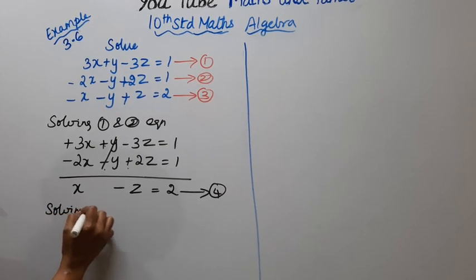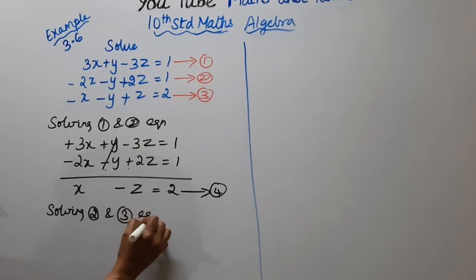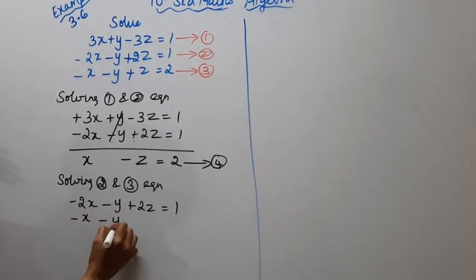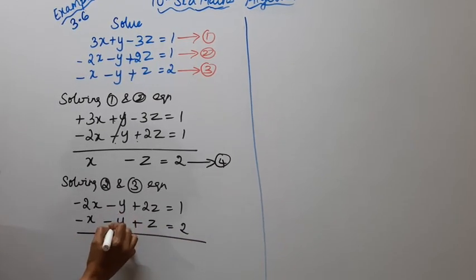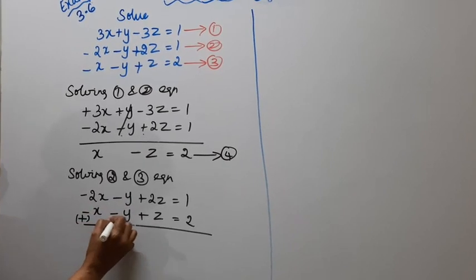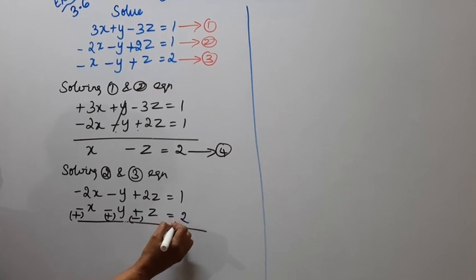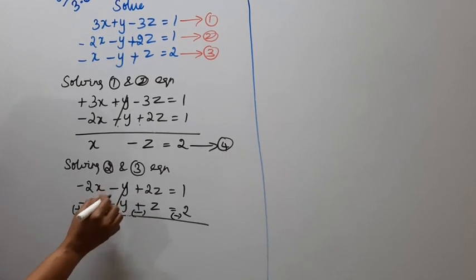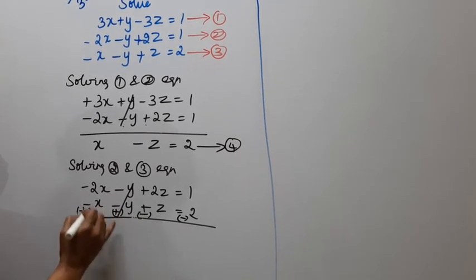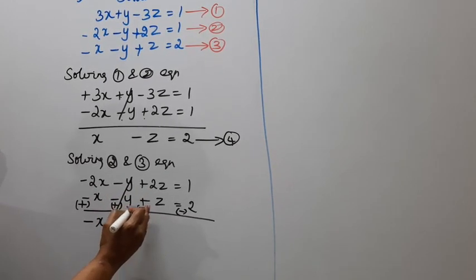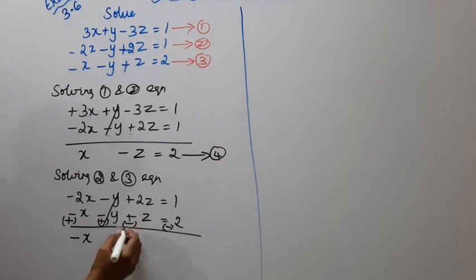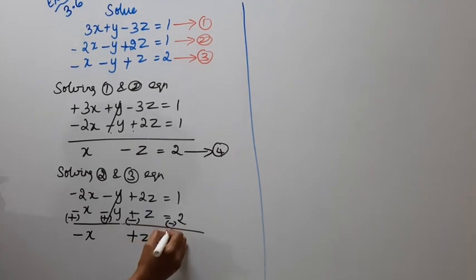Now solving the second and third equations: minus 2x minus y plus 2z equal to 1, and minus x minus y plus z equal to 2. The y terms have the same sign, so we change signs on the third equation. After elimination: minus 2x plus x gives minus x, and 2z minus z gives plus z, and 1 minus 2 gives minus 1.